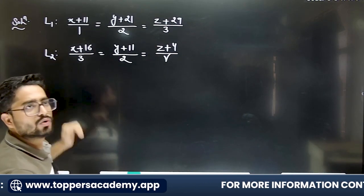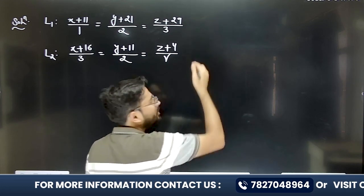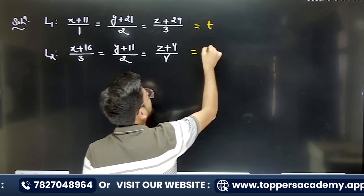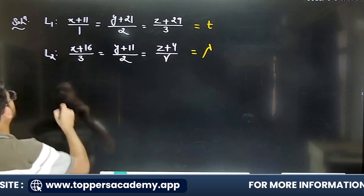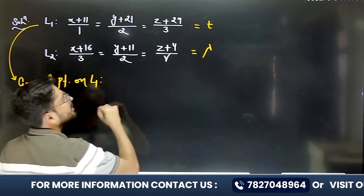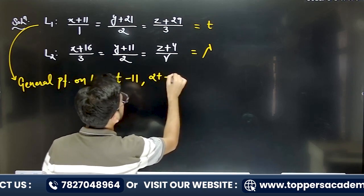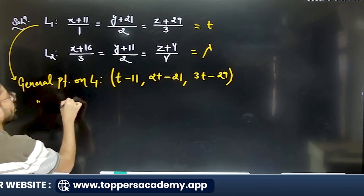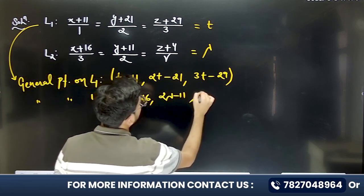We are given two lines l1 and l2 that intersect each other. For the point of intersection, they share the same coordinates. Let's say the parameter for l1 is t and for l2 is lambda. The general point on l1 is (t−11, 2t−21, 3t−29), and the general point on l2 is (3λ−16, 2λ−11, γλ−4).